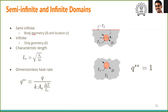So far we considered semi-infinite domains — a body embedded in a medium at a finite distance from a top surface but extending infinitely in the other direction. In the case of an infinite domain, the domain extends to infinity in all directions, and we have only one set of parameters coming from the shape of the object, with no surface-distance parameter. In this case it is possible to simplify the expression and write what is known as a dimensionless heat rate, instead of a shape factor.